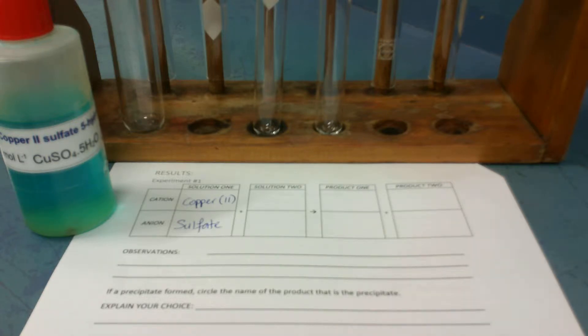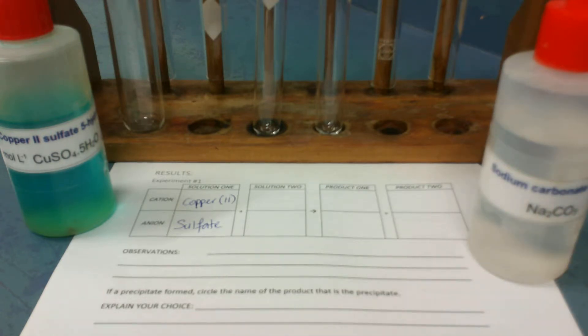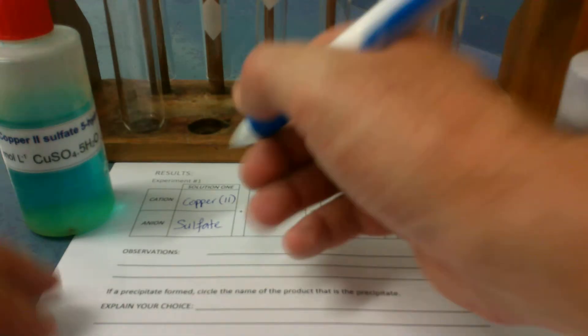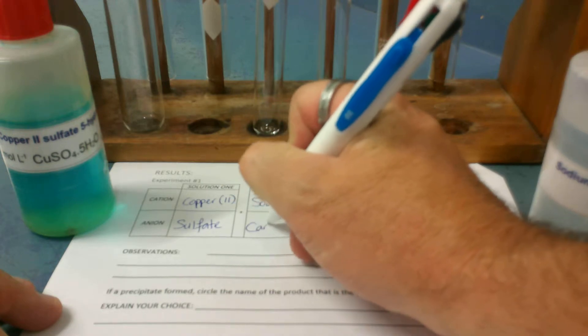The other chemical we're going to use for this experiment is sodium carbonate being mixed with it. So that's solution number 2. So I write sodium at the top and carbonate below it.